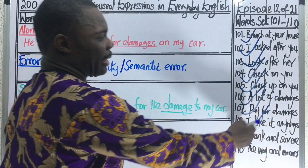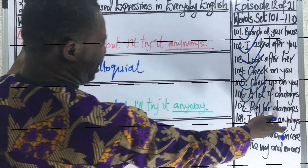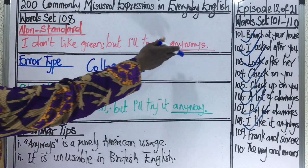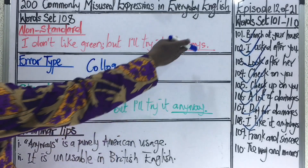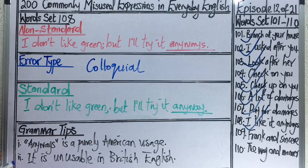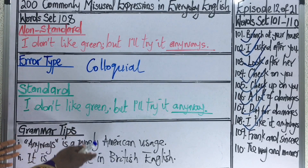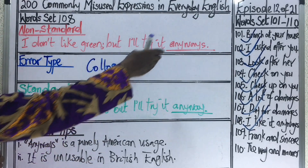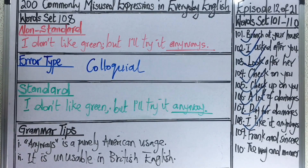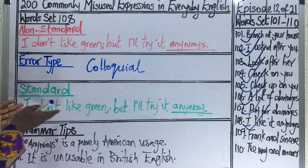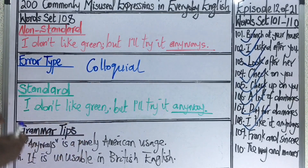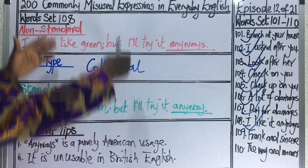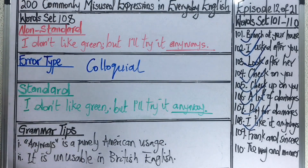We move forward to word set 108: I don't like green but I'll try it anyways. This is a colloquial expression. Under the grammar tips, 'anyways' is a purely American usage and is simply unusable in British English. In British usage, you would say I don't like green but I'll try it anyway — without the S.